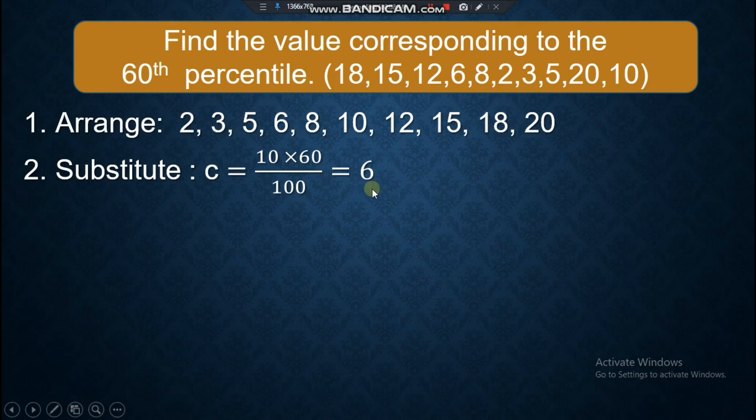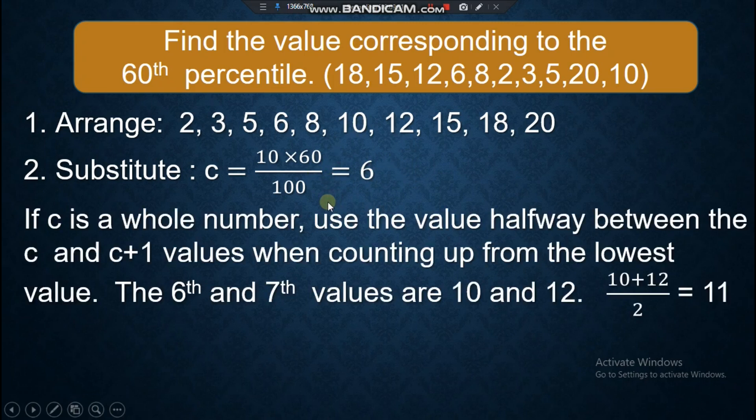In our previous example, it is not a whole number. How about 6? Yes, it is a whole number since the fractional part or the decimal part is 0. If C is a whole number, use the value halfway between C and C plus 1 values when counting up from the lowest.